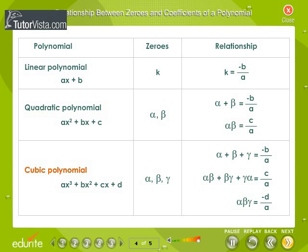For a cubic polynomial, the sum of the zeros is -b/a. The sum of the products of the zeros taken two at a time is equal to c/a. The product of the zeros is -d/a.